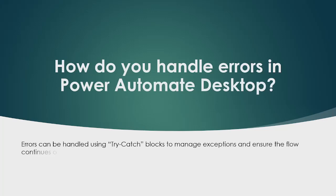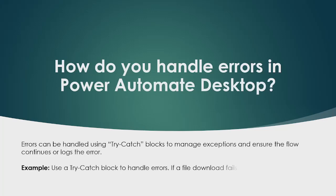The next question is: how do you handle errors in Power Automate Desktop? You can handle errors using try-catch blocks to manage exceptions and ensure the flow continues or logs the error. For example, if a file download fails, the catch block can log the error and send an email notification. However, in Power Automate Desktop there is no action called 'try-catch' — instead, we have the 'On Block Error' action, which is used to handle errors.